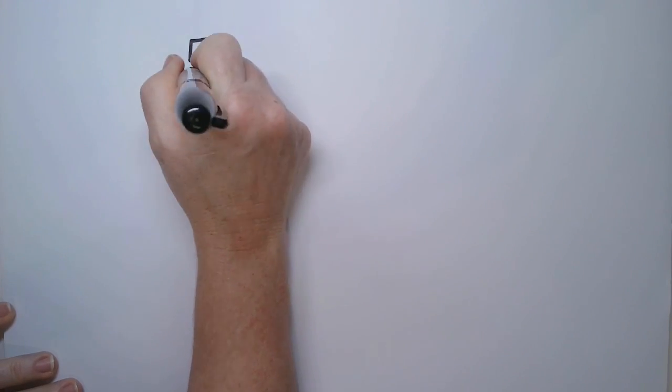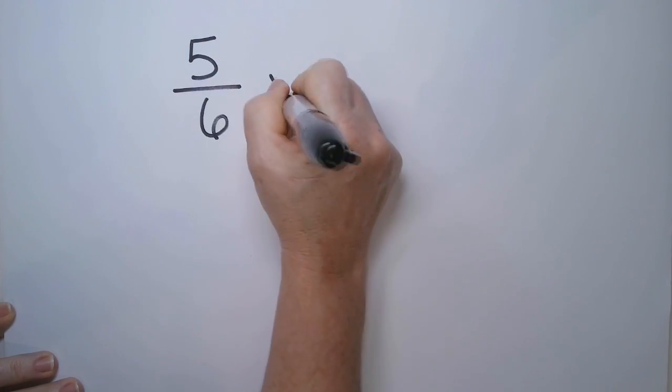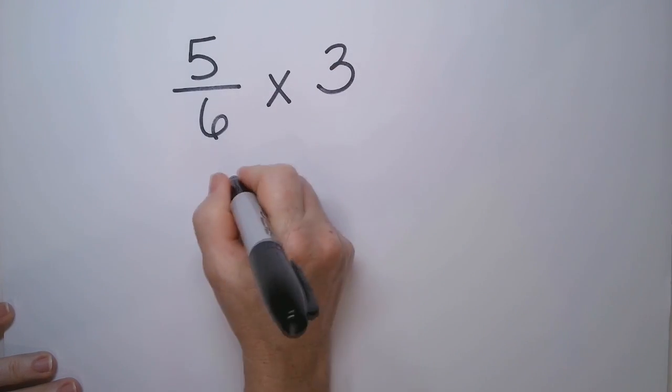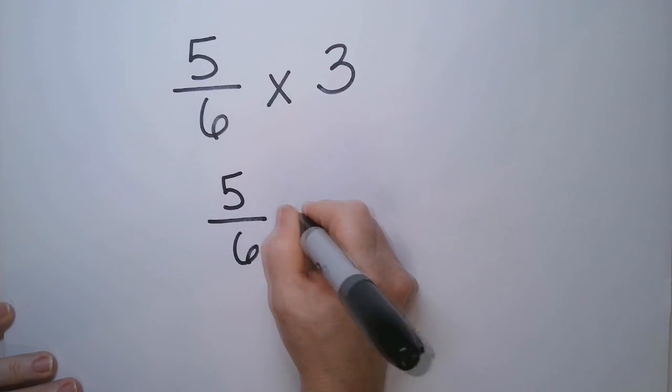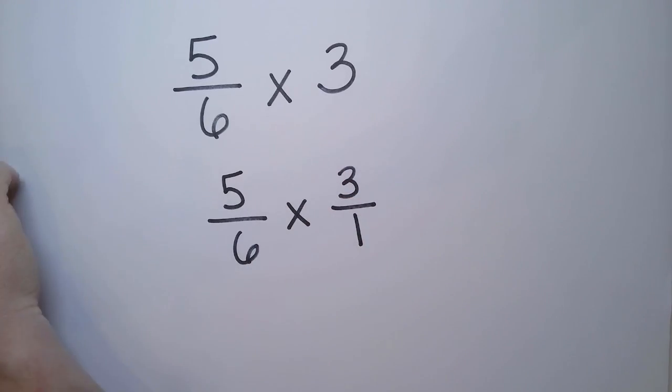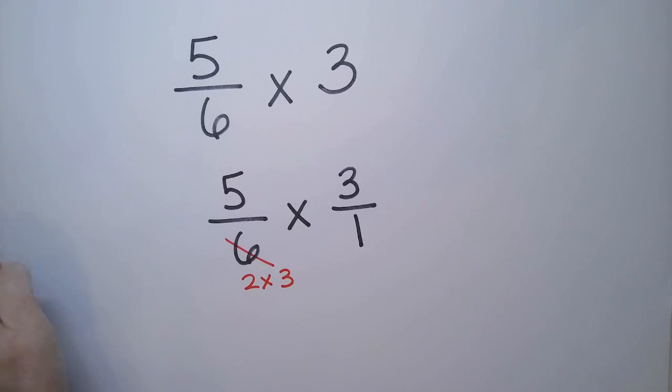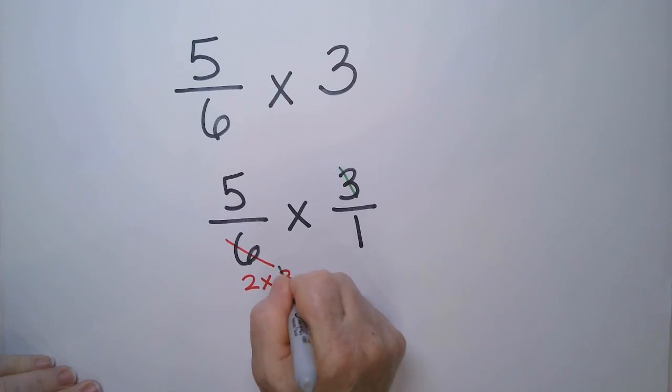Should we try one more example? How about 5 sixths times 3? 5 sixths stays the way it is. Times 3 over 1. I'm going to reduce this. This is 2 times 3. And this 3 cancels with that 3.